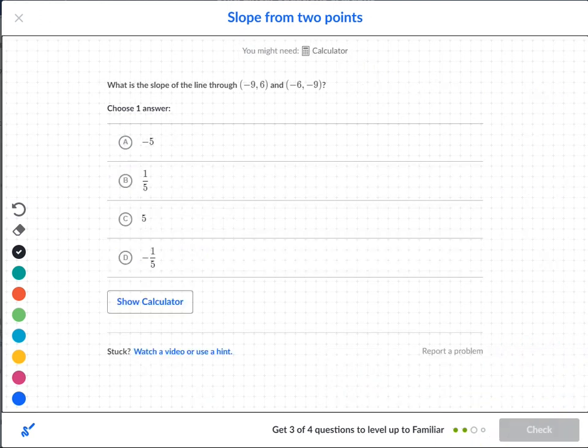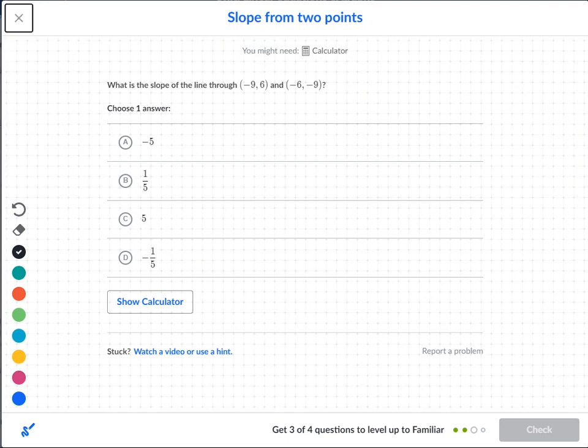Okay, next question. I have the following points here. And my first point is negative nine. So I have negative nine, six. And then negative six, negative nine. x1, y1, x2, y2.